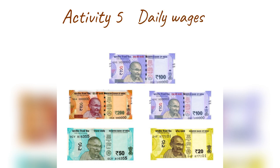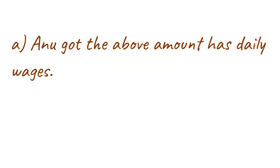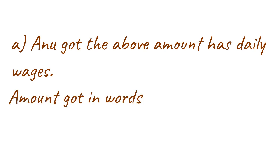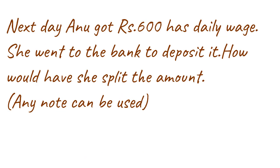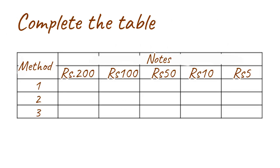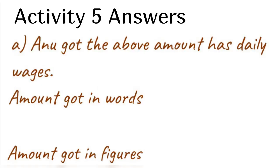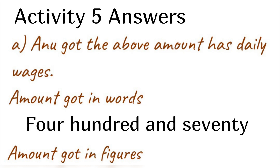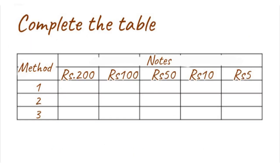Activity 5: Daily Wages. Anu got the above amount as daily wages. The amount got in words and in figures — we have to write in numbers. Activity 5 Answers: The amount got in words is four hundred and seventy, and in figures is 470. Next day, Anu got Rs. 600 as daily wage and went to the bank to deposit it.